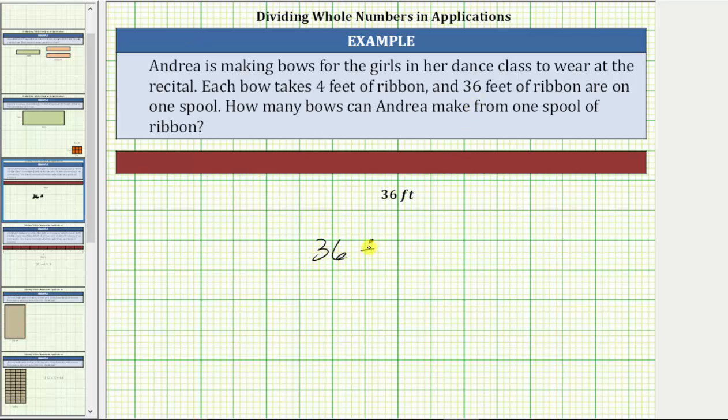36 divided by four is equal to nine, which means there are nine lengths of four feet in 36 feet or there are nine copies of four in 36. Andrea can make nine bows from one spool of ribbon.